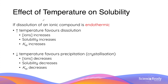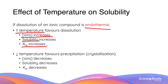The effect of temperature on dissolution is similar to its effect on any other reversible reactions. If a compound's dissolution is endothermic, then it is favoured at a higher temperature. So increasing the temperature will increase the concentration of ions and the solubility of the ionic compound. Since ion concentrations at equilibrium have increased, the value of the solubility product also increases.